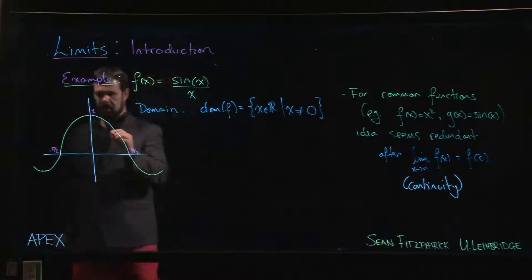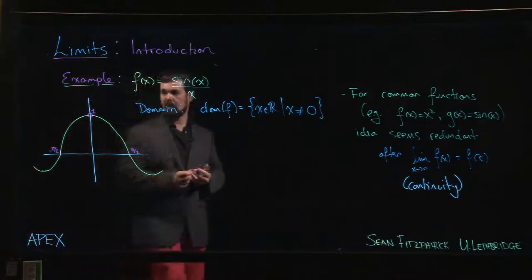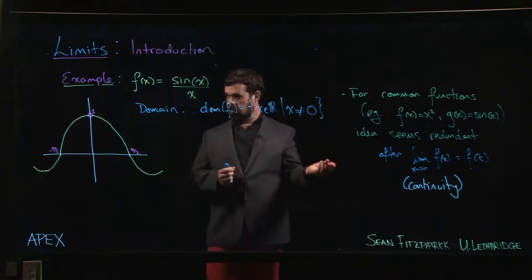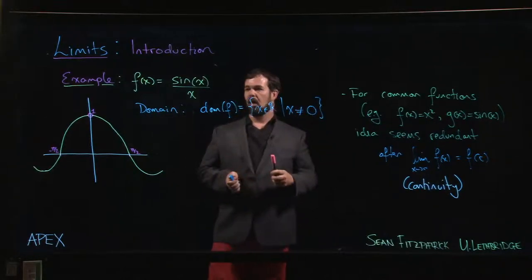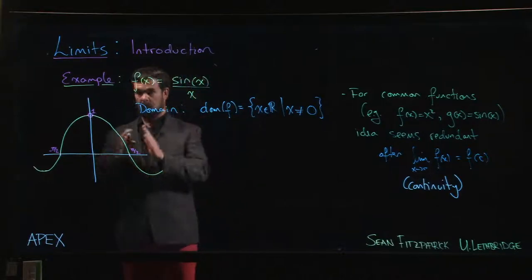What's really happening is the function isn't actually defined at zero. So actually, there's a hole in the graph at that point. So the function is not defined there. So if we're trying to graph it, we can't plot a point at x equal to zero.